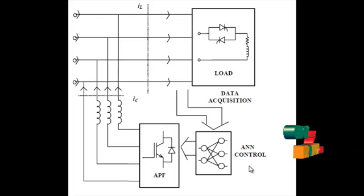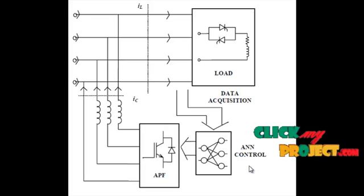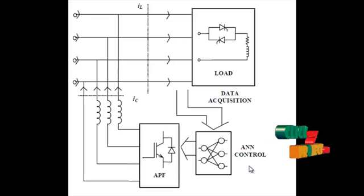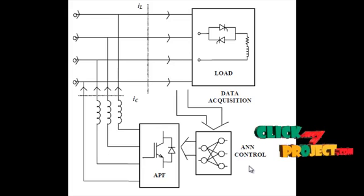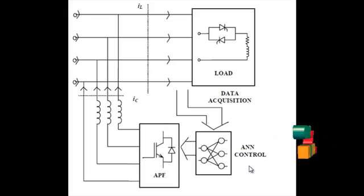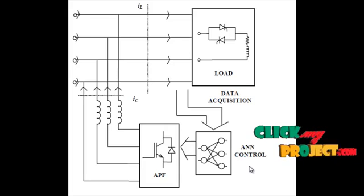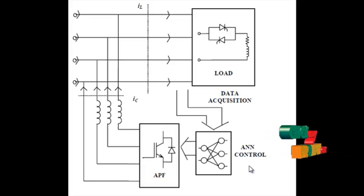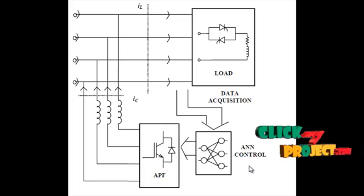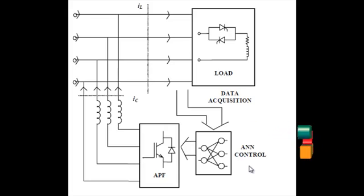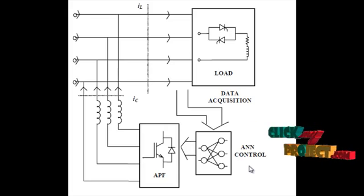The capacitors charge and discharge based on the input. When the fundamental frequency is reduced below a particular level, the artificial neural network automatically controls the shunt APF. The shunt APF injects additional current or voltage into the primary circuit using filters, and those filters reduce the harmonics of the shunt-generated current before it is connected to the bus. The load then receives the corrected frequency.